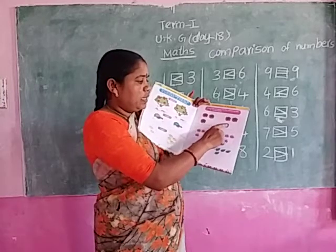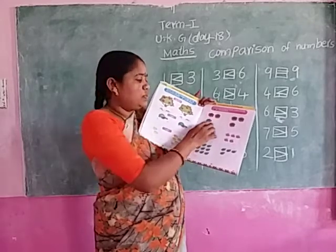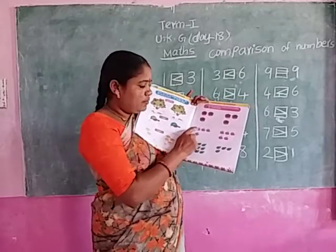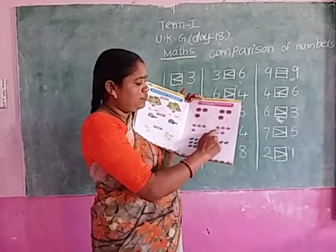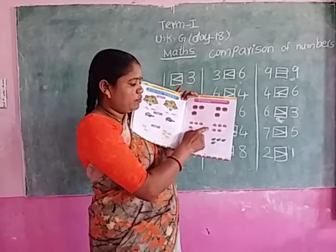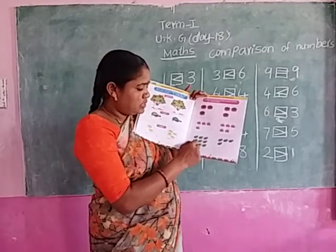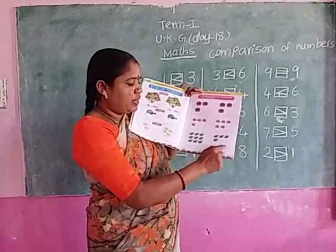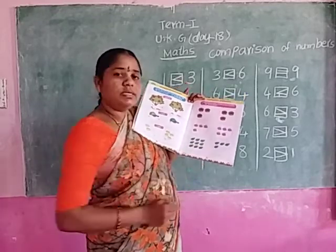Here: 1, 2, 3 — write 3. Here: 1, 2, 3 — write 3. Both the boxes have the same, so we keep equal. Write down 4. Here: 1, 2, 3, 4 — write 4. Here: 1, 2, 3, 4, 5 — write 5. Which is a greater number? This is a greater number, so open symbol. Here how many leaves are there? 1, 2, 3, 4, 5, 6, 7, 8, 9 — write 9. Here: 1, 2, 3, 4 — write 4. Which is a greater number? 9 is a greater number, so open symbol.